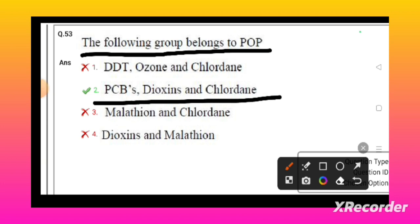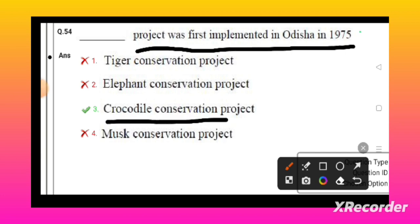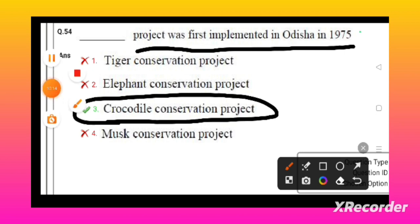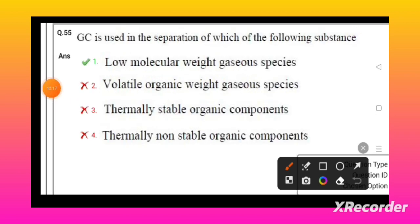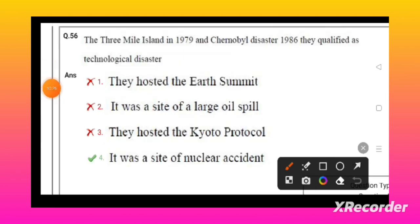Crocodile conservation project was first implemented in Odisha in 1975. Gas chromatography is used in the separation of low molecular weight gaseous species. The Three Mile Island (1979) and Chernobyl disaster (1986) are qualified as technical disasters - they are the sites of nuclear accidents.